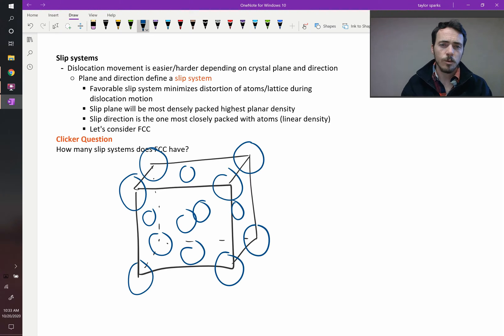In this system, what's the highest planar density plane? Well, we talked about this in a previous chapter, but it's actually this 1-1-1 plane. It's the one that connects like this in the crystal.